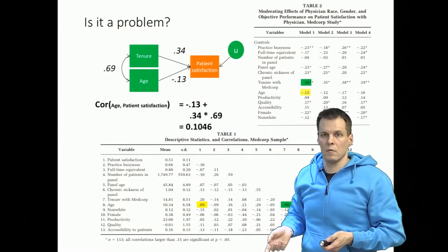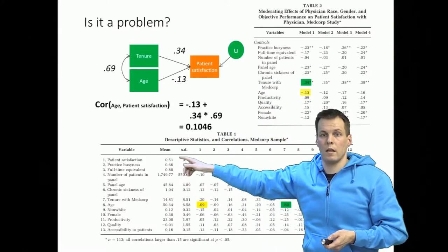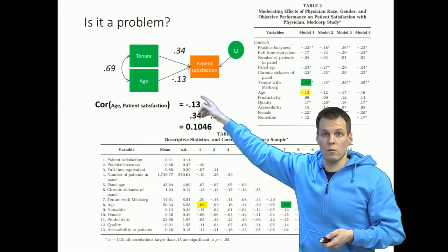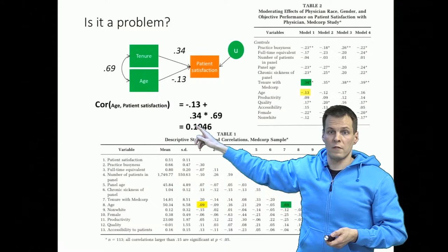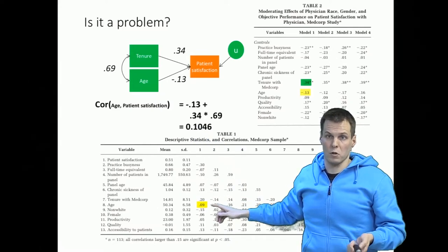We take that path, once minus 13, and we take the correlation path 0.69 times 3.4, this correlation path. So that gives us some math. We get that the implied correlation based on this part of the model only is 0.1, which is very close to the correlation.